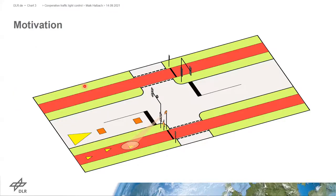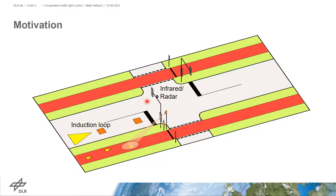Today, motorized traffic is considered in the control with several kinds of detection — this might be induction loops, radar, or infrared detection to determine occupancy of specific areas or time gaps between headways. This information can be used for a vehicle-actuated traffic light control to find the optimal next phase or phase duration according to the actual traffic demand at the intersection. However, cyclists are not always considered in the control, so they often can only use the green time allocated to motorized traffic.